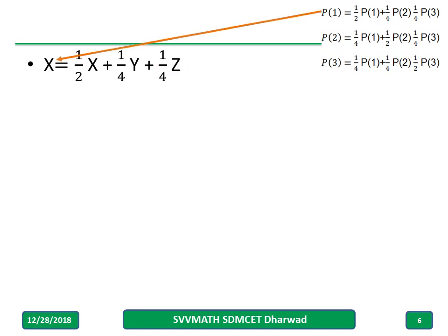Now, I have replaced, and now I am writing x minus half x equal to half x, and the LCM of these two is 4, and y plus z by 4. Now, you can find out x equal to y plus z divided by 2.